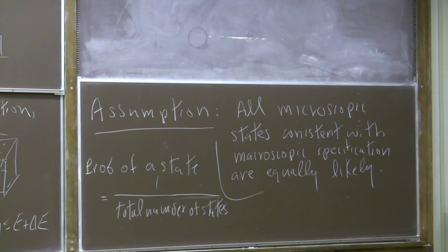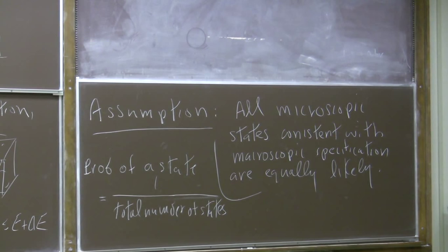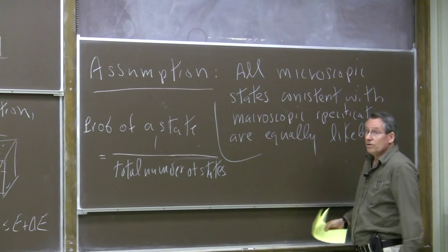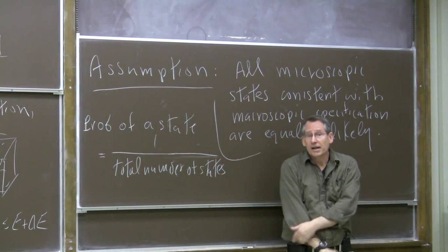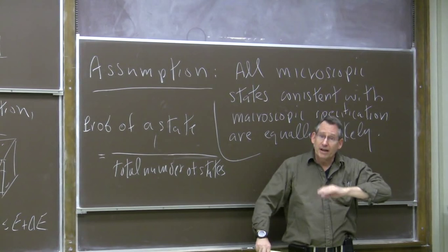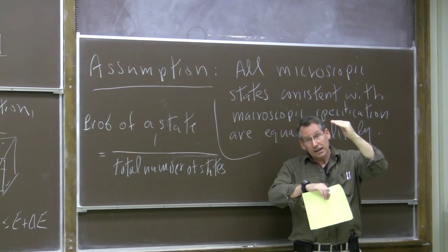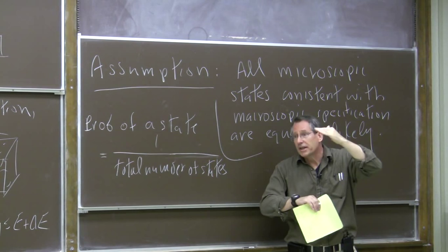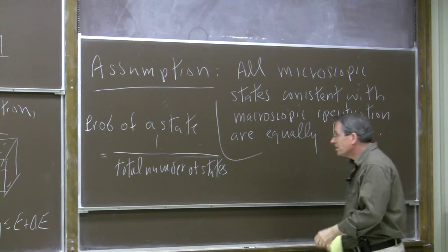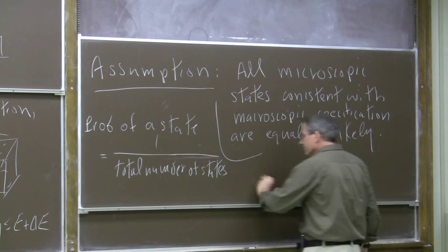Quantum mechanics helps us here — it allows us to count states. States are discrete in quantum mechanics. If we have a system with a finite volume and finite size, there's some Hamiltonian which characterizes the state, and it has a spectrum of eigenvalues. All the stationary states — there are actually a finite number of them in an energy range. In principle you can count them all. In quantum mechanics, states are really discrete, which makes it easier to give a rigorous version of what we mean by counting states.